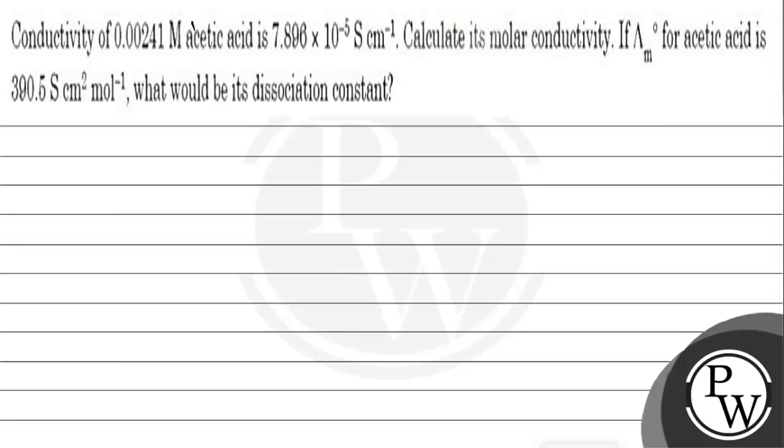Hello Bacho, so let's read this question. Conductivity of 0.024 molar acetic acid is 7.896 into 10 to the power minus 5 cm cm inverse. Calculate its molar conductivity.